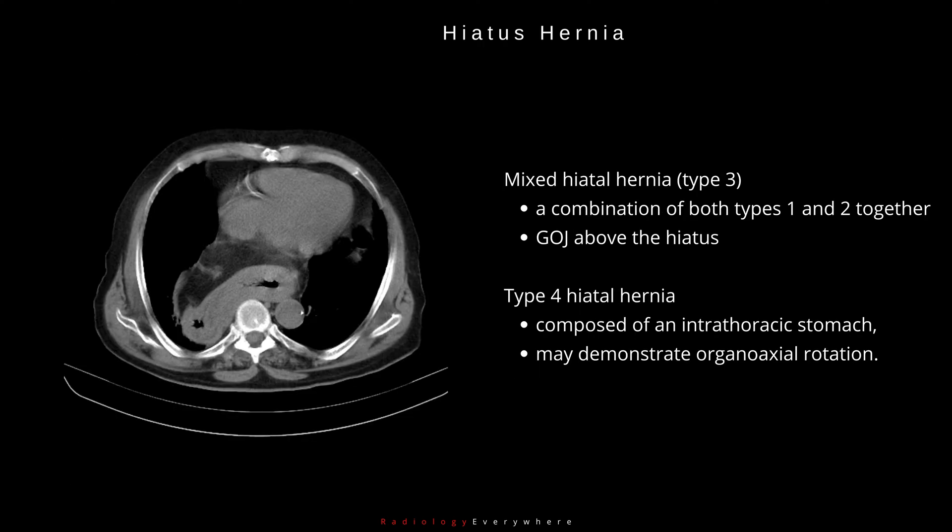Rolling hiatal hernias are most easily diagnosed fluoroscopically or with CT. Type 3, mixed hiatal hernia, is a combination of both Types 1 and 2 together, with the gastroesophageal junction above the hiatus.